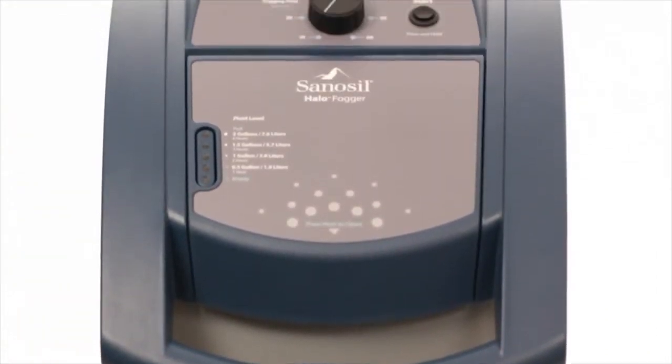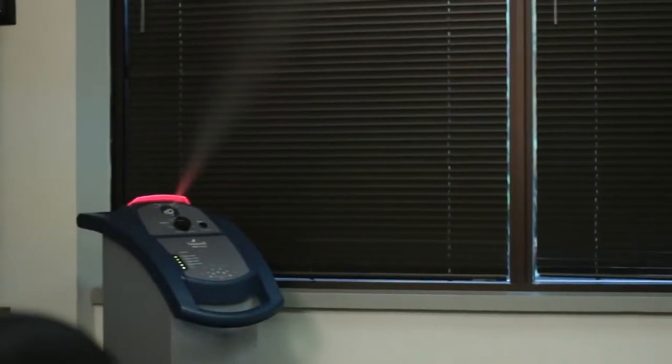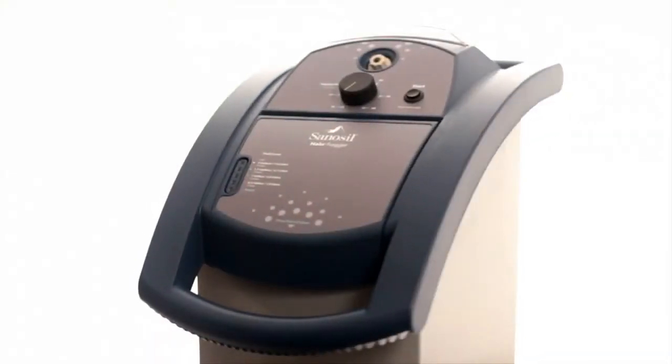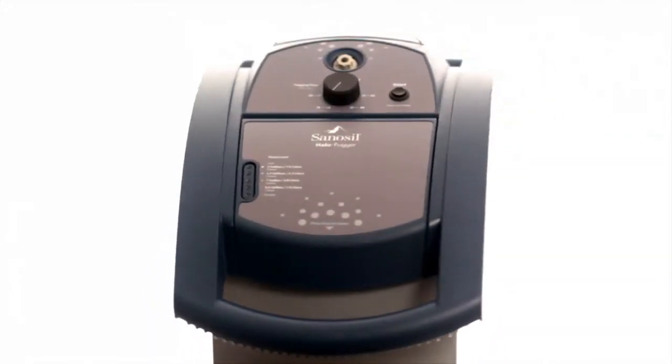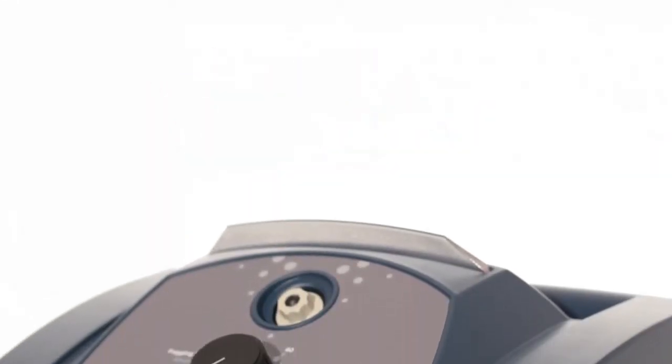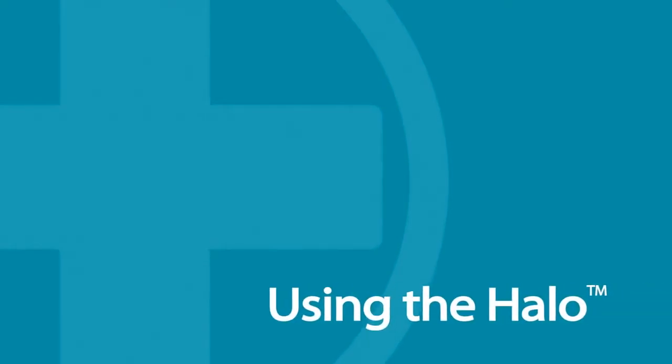With the introduction of Sanosil's Halo Fogger, adjunct disinfecting of surfaces within a room has never been easier. The Halo performs the complex task of dispensing atomized Sanosil disinfectant within large spaces and is as easy and simple to operate as your household dishwasher. Now, let's take an in-depth look at the Halo's full operation, start to finish.